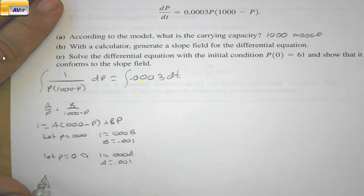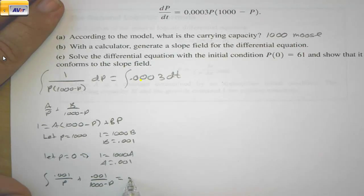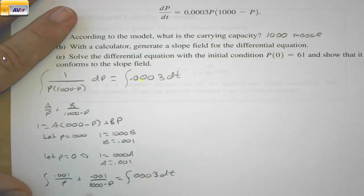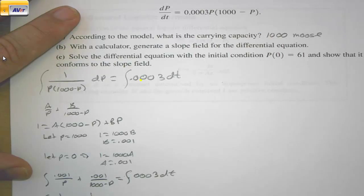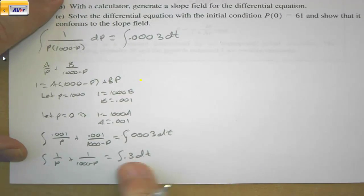Now this integral becomes the integral of 0.001/P + 0.001/(1000 - P). And that's equal to 0.0003 dt, so the integral of that. Now if we multiply both sides by 1000, we get 1/P + 1/(1000 - P) = integral of 0.3 dt.